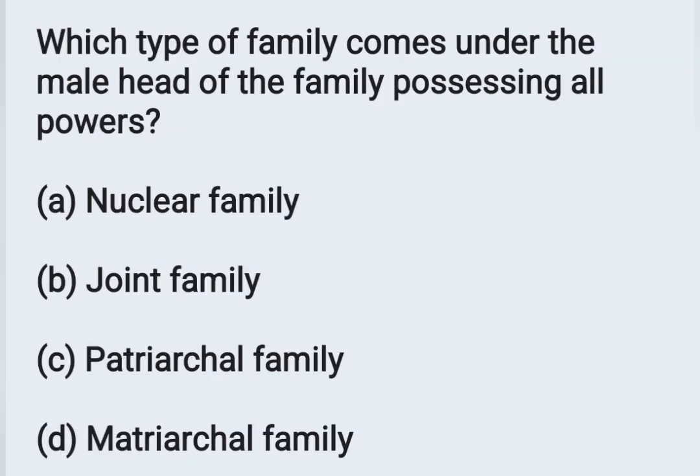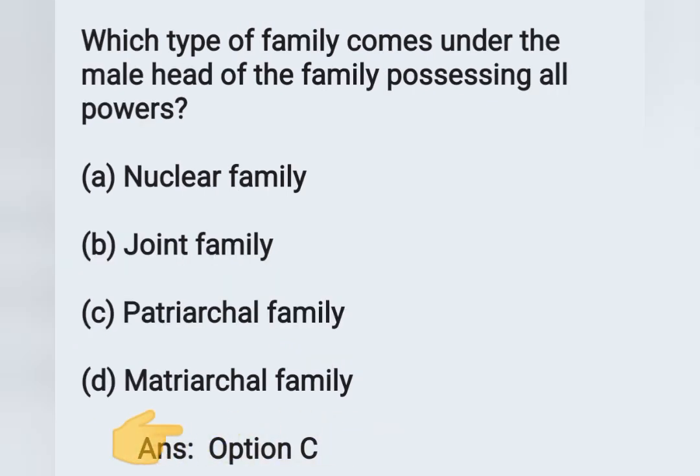The next question: which type of family comes under the male head of the family possessing all powers? Options: A) Nuclear family, B) Joint family, C) Patriarchal family, D) Matriarchal family. When the male is the dominant head of the family possessing all powers, it is called a patriarchal family. Option C is the correct answer.